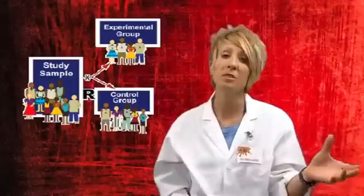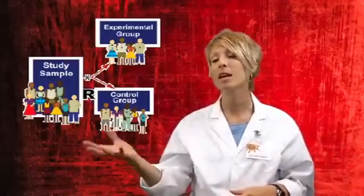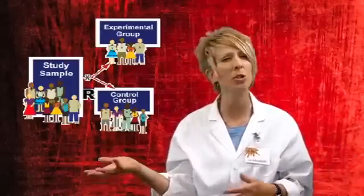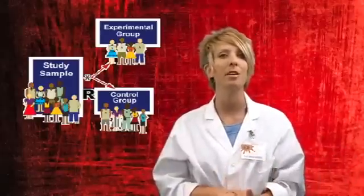When you do your experiment — that third step of the scientific method — you need to have at least two different groups. One group is the group you're going to test something on; the other is the group you're not testing. For instance, let's say I want to know: does Mountain Dew make me hyper? Do I want to give everybody in class Mountain Dew? No, because then I won't have anything to compare it to.